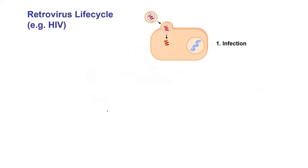I want to show you one more type of life cycle, which is really interesting and unique — this is characteristic of HIV, the virus that causes AIDS. As far as I know, there's nothing like this found in viruses that infect bacteria; this is animal viruses. You're seeing something a little different in that first initial step: this virus has an envelope around it, surrounded by a membrane it grabbed on its way out of the infected cell. This little envelope is going to fuse with the host membrane.